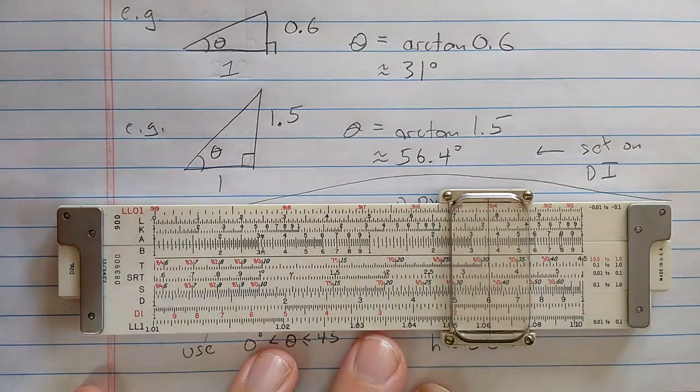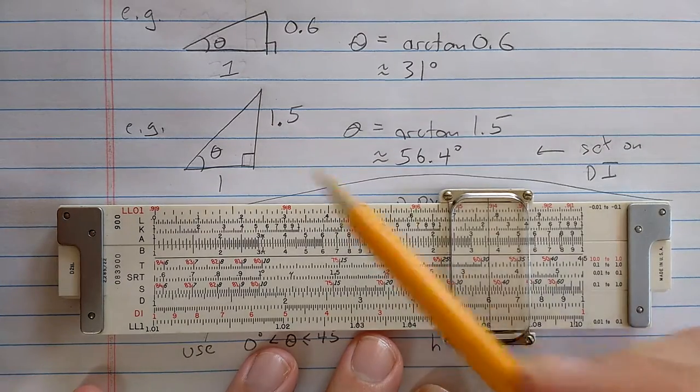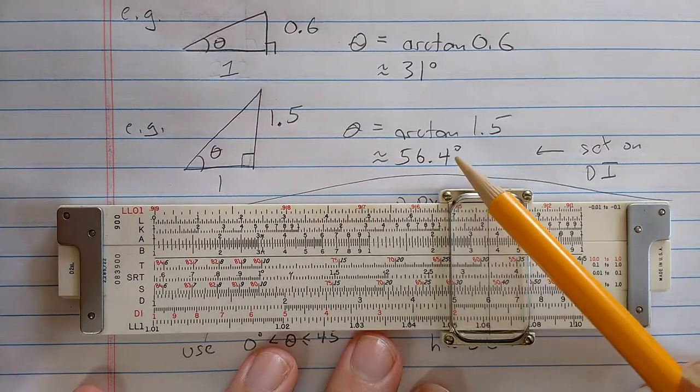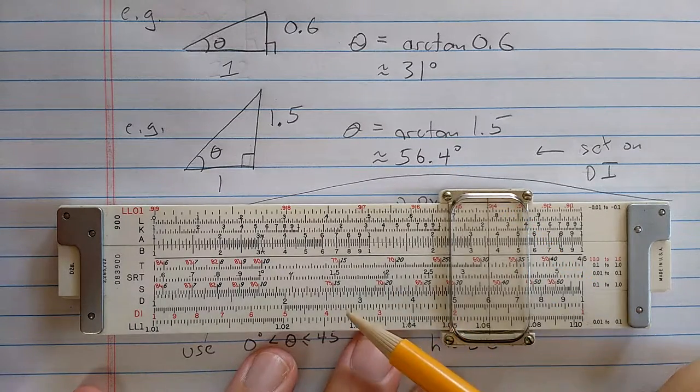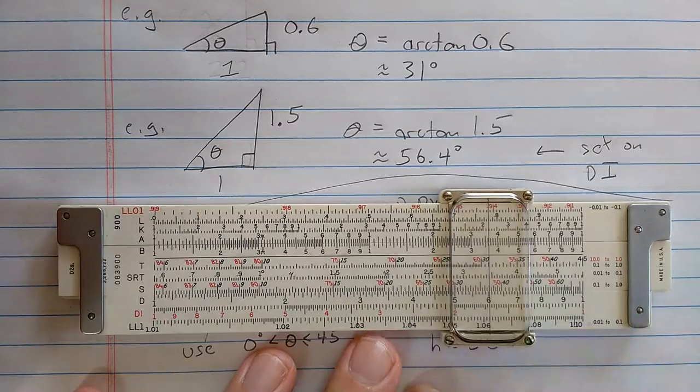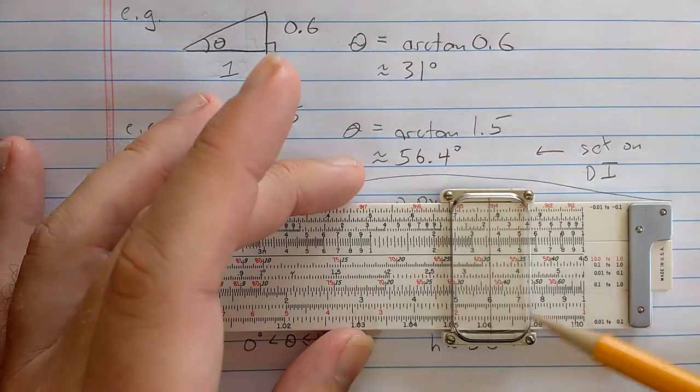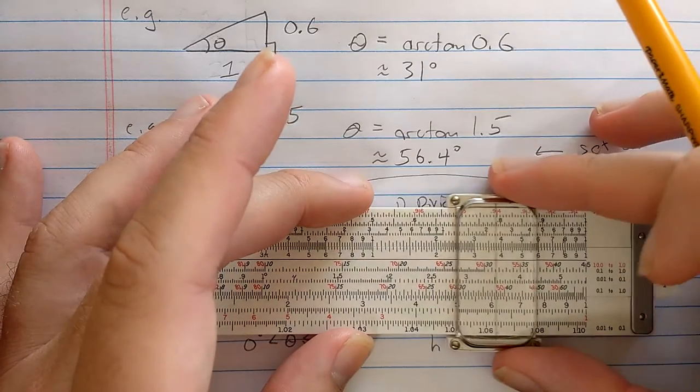On the other hand, if I have a triangle like this where the tangent is going to be greater than 1, then on this type of slide rule I use the DI scale and the red marks on the T scale. So here on the DI scale, down here, I'm going to set this 1.5.